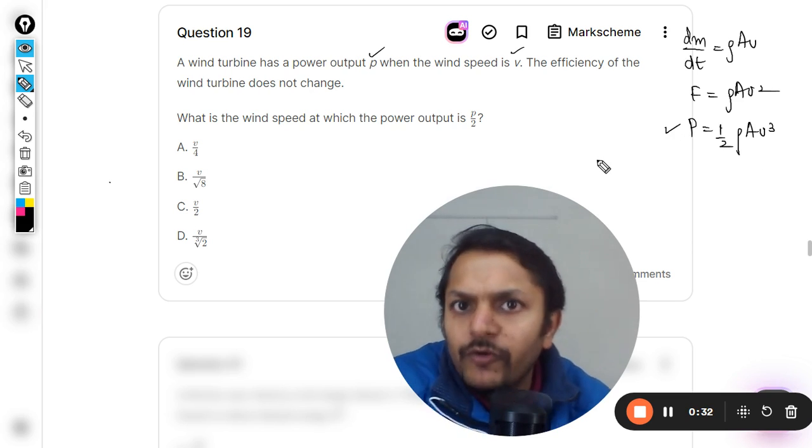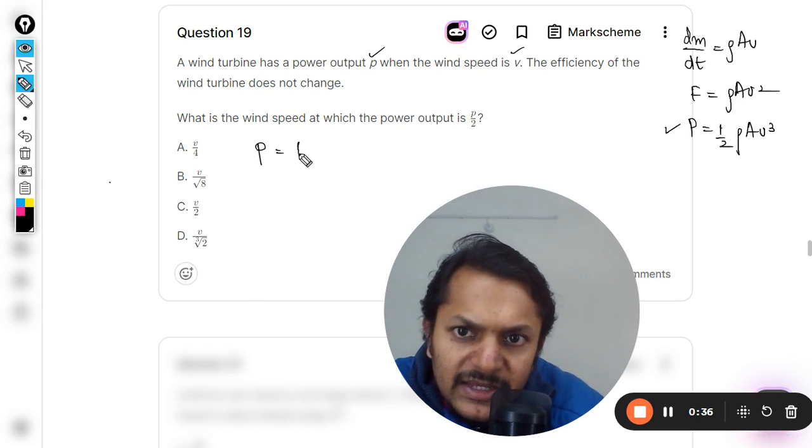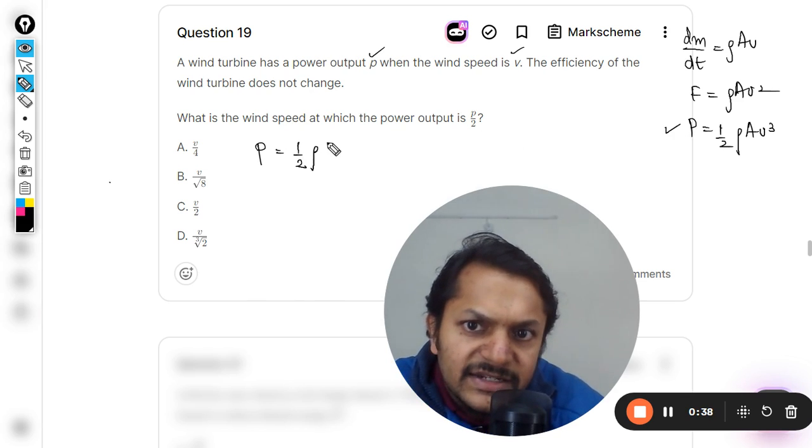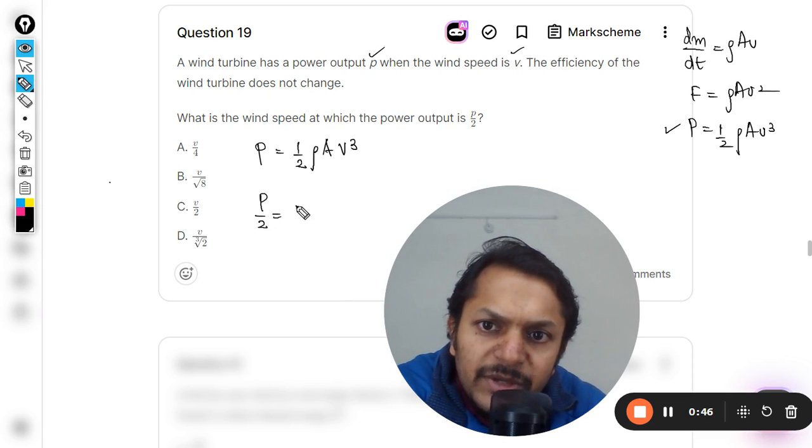So case number one, the power is P, density ρ, area A, and velocity is v. Case number two is that you need to find the new velocity but the power should become P by 2. So this velocity will be taken as v dash.